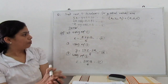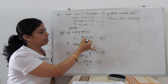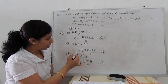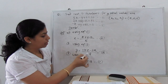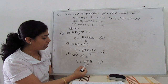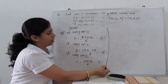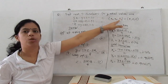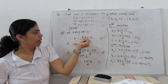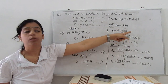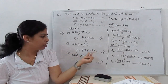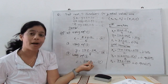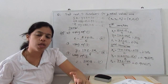Now we start the iteration. The initial values are x₀ = 0, y₀ = 0, z₀ = 0. For the first iteration: x₁ = (10 + y₀ − z₀) / 5 = 10/5 = 2. Similarly, y₁ = (11 + z₀ − 2x₀) / 8 = 11/8. And z₁ = (3 + x₀ − y₀) / 4 = 3/4 = 0.75.